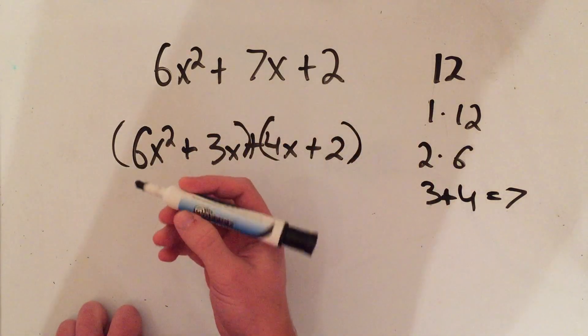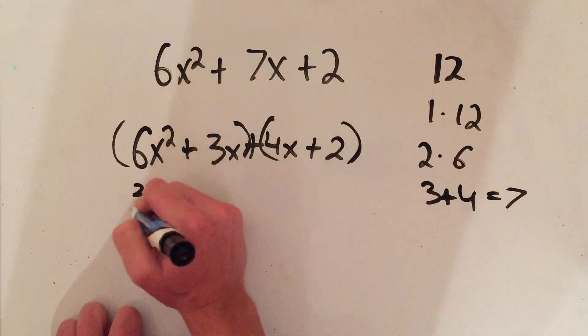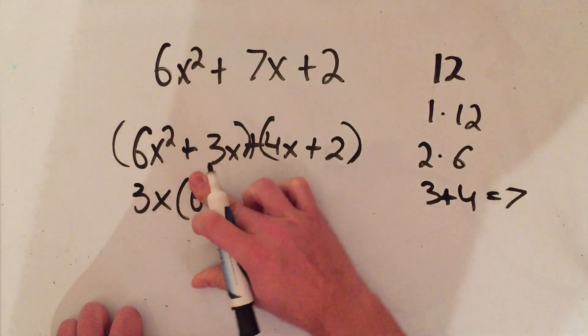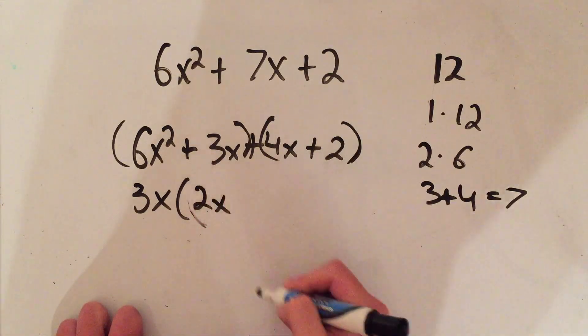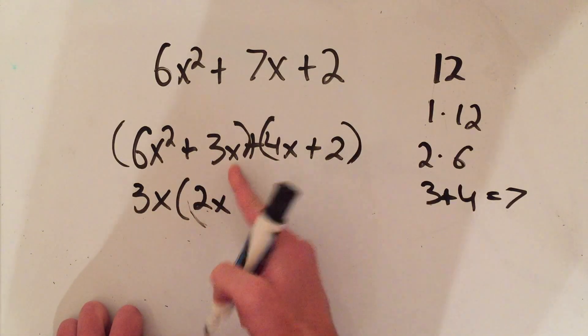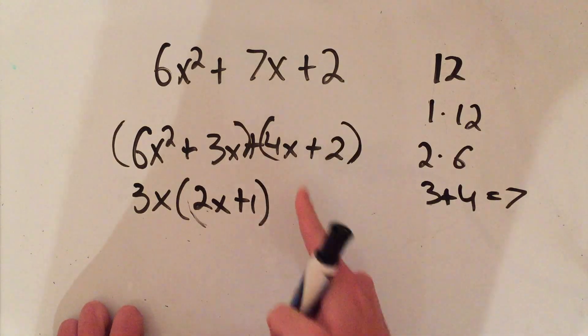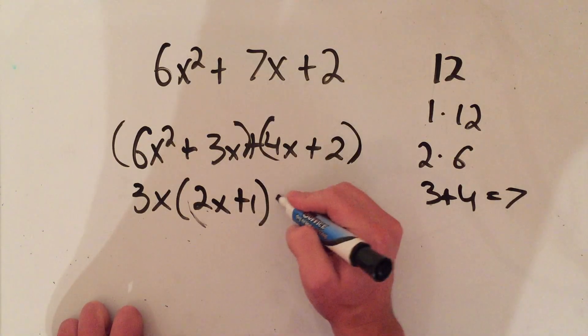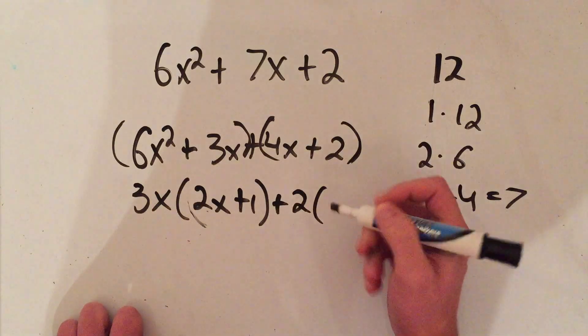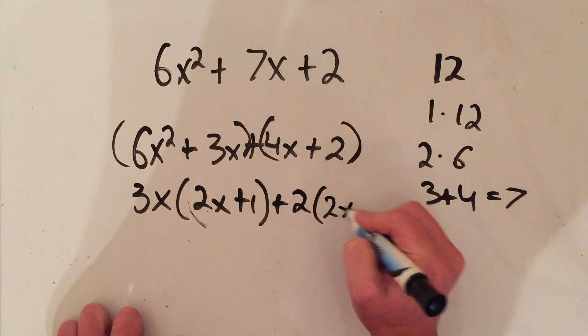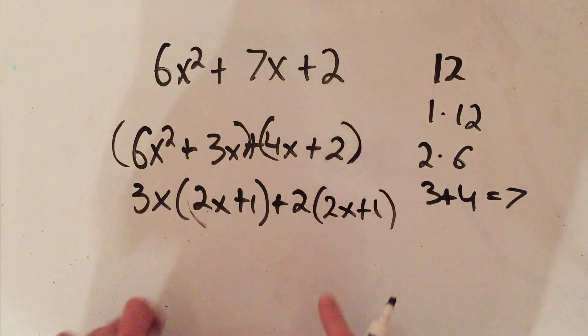So I'll pull 3x out. Out of 6x squared, I'd be left with 2x. 3x out of 3x, that's 1. Here, the greatest common factor is just 2, so I'll pull out 2. Out of 4x, that's gonna be 2x. 2 out of 2 is 1.